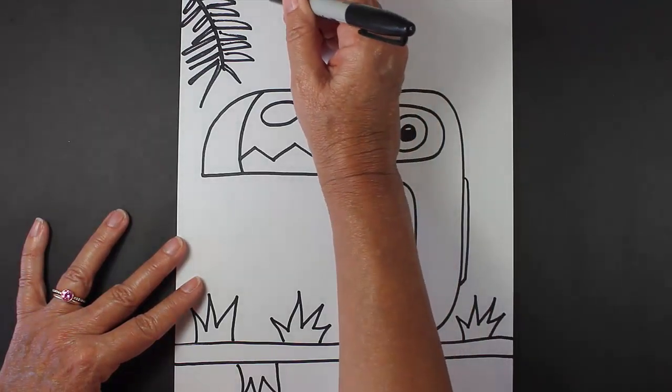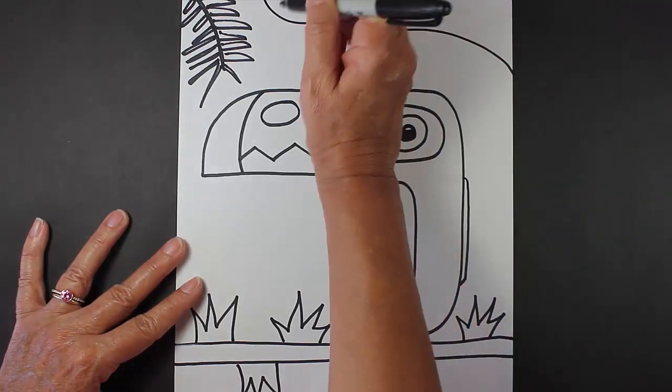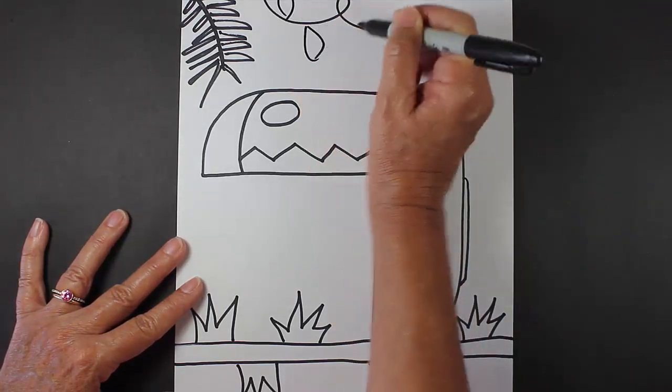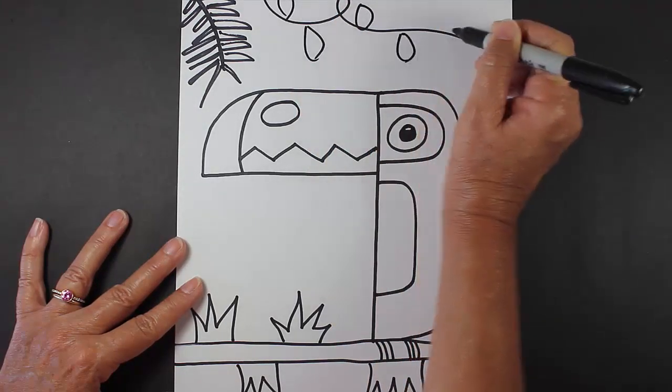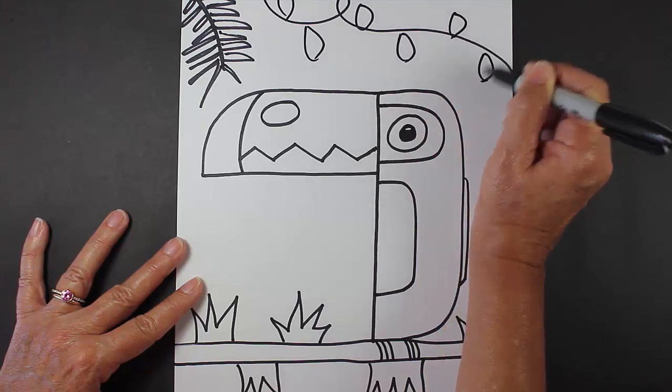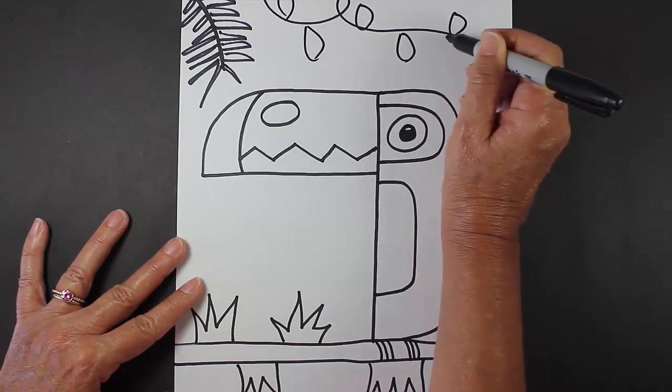I think I'm going to put a vine right here, and maybe some leaves on the vine. It's really up to you as to your background and how you want to decorate it.